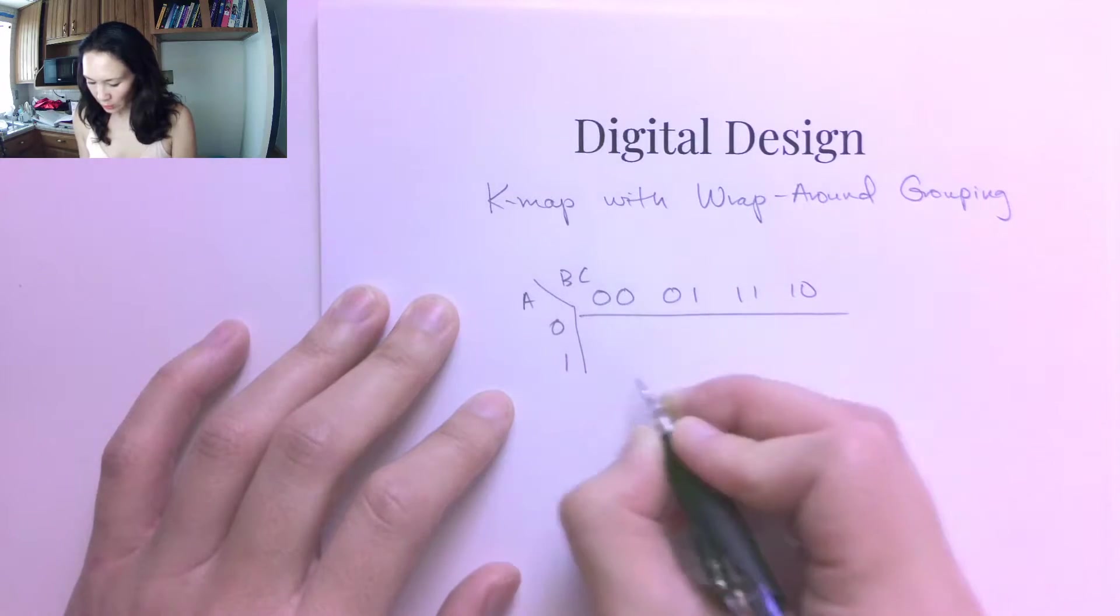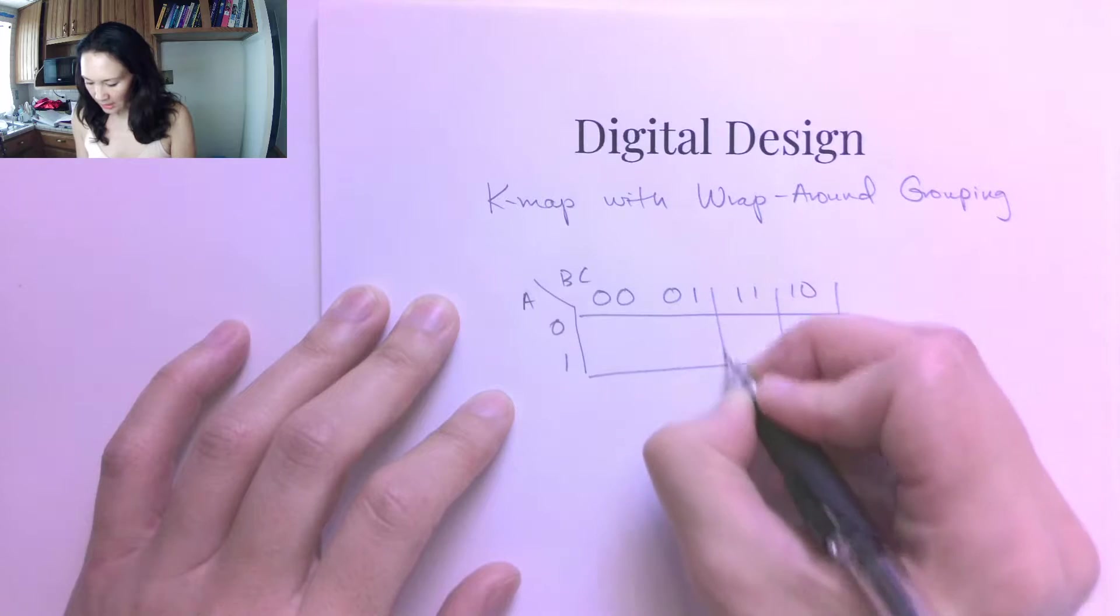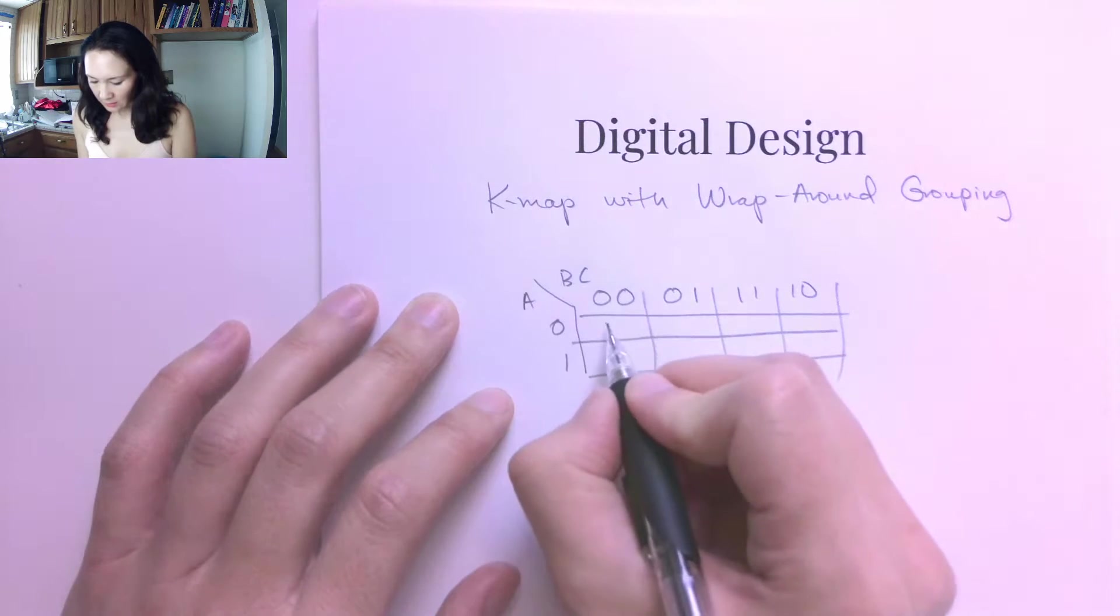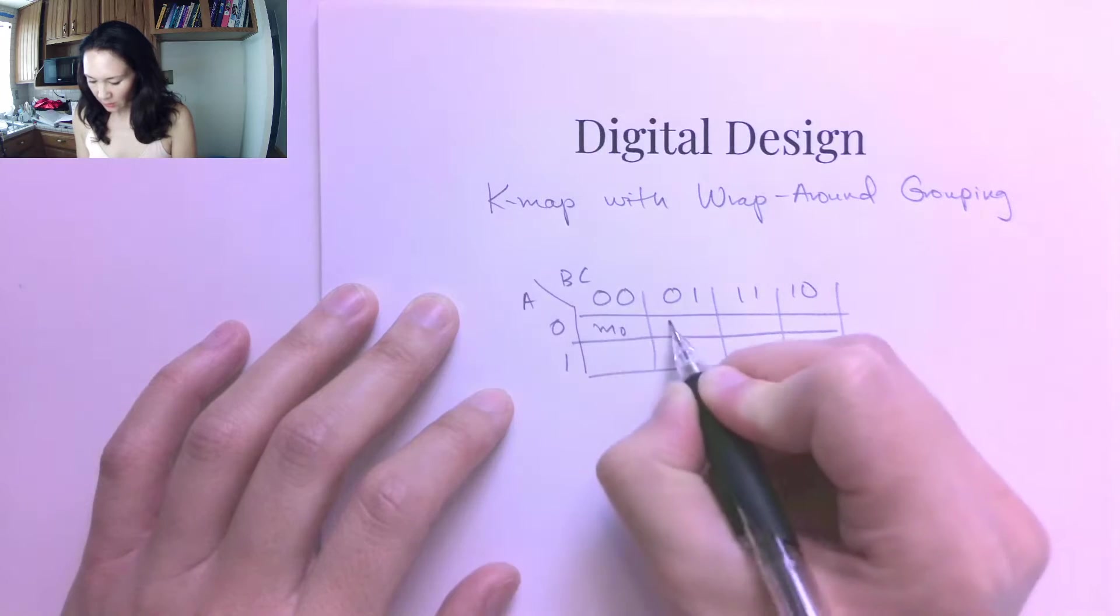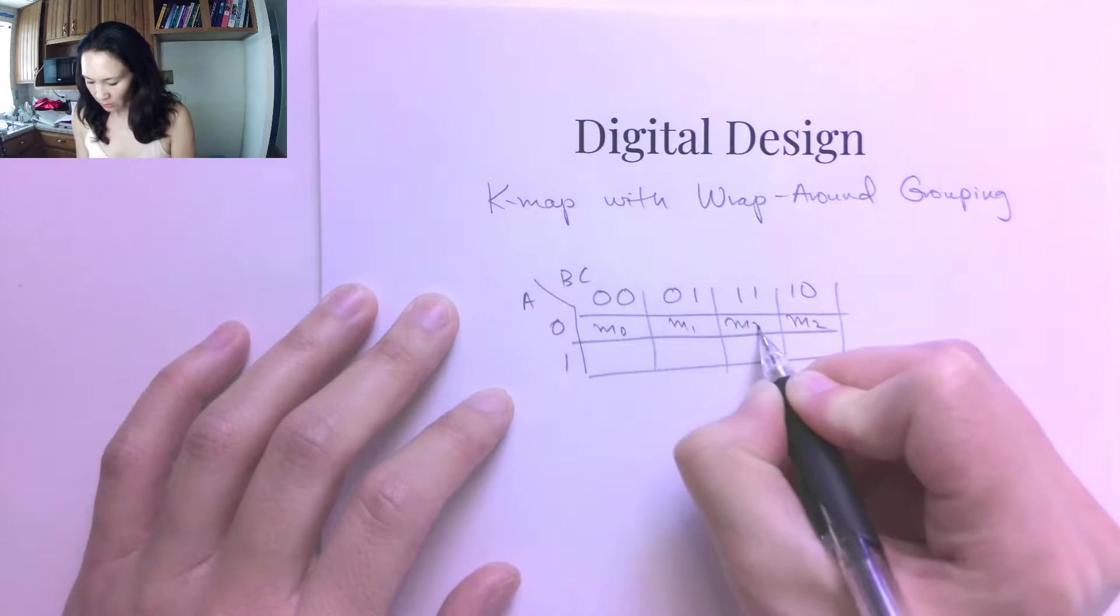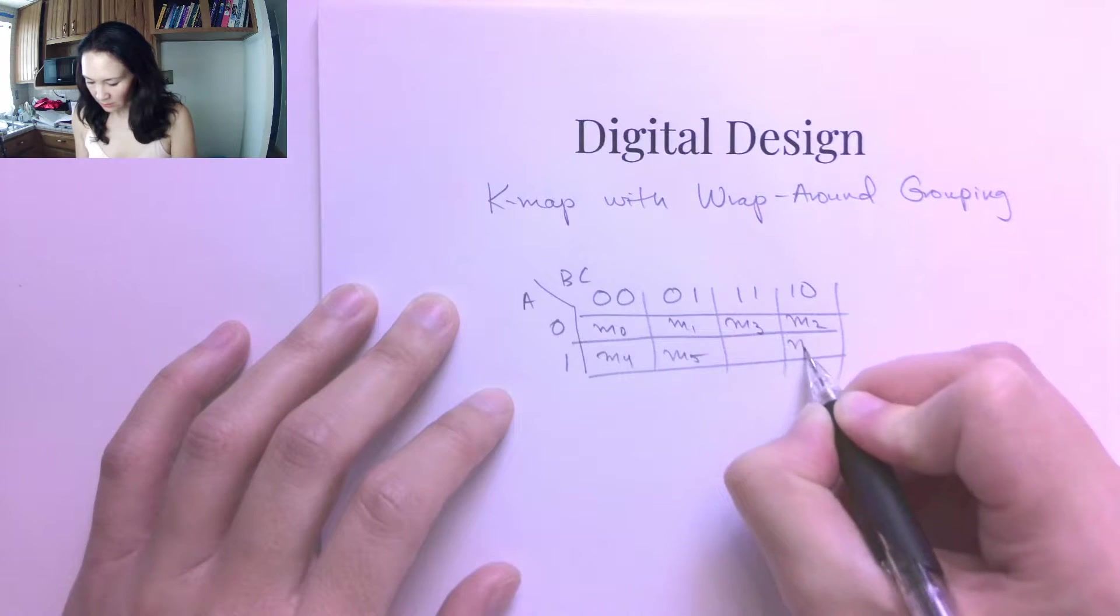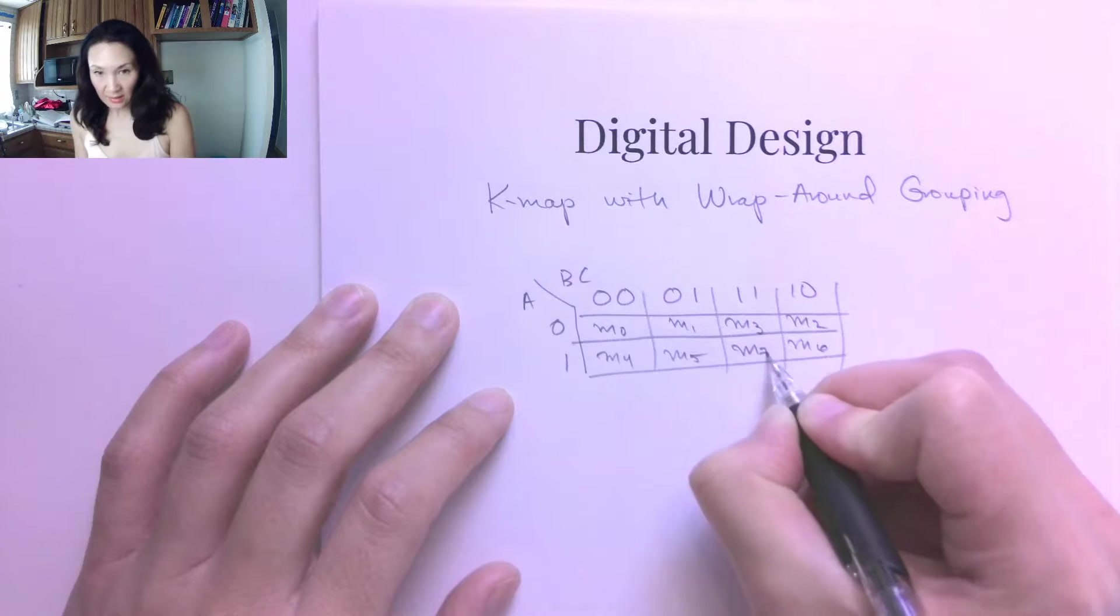Let me refresh your memory. The location for each one of these cells, so this is going to be minterm 0, minterm 1, minterm 2, minterm 3, and then minterm 4, minterm 5, minterm 6, and minterm 7.